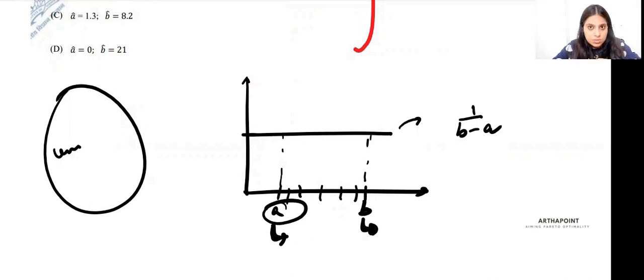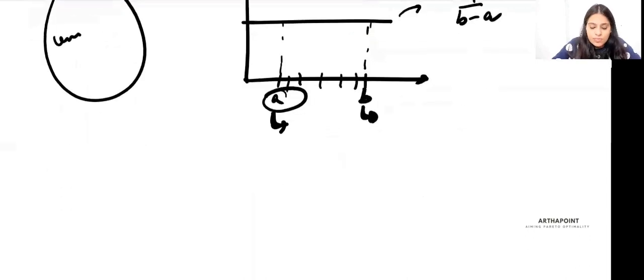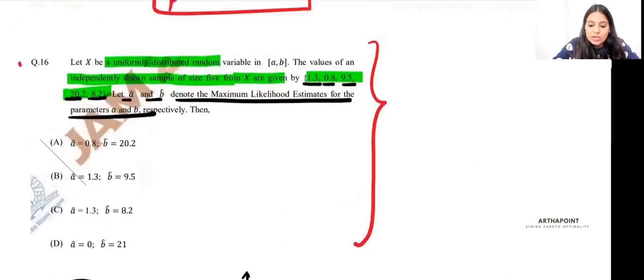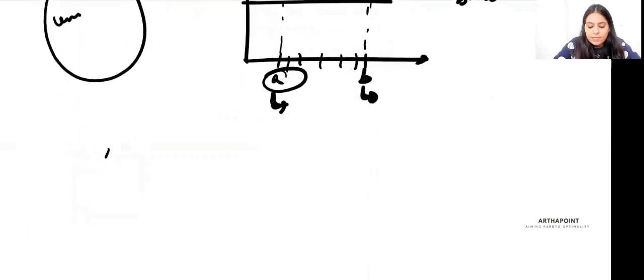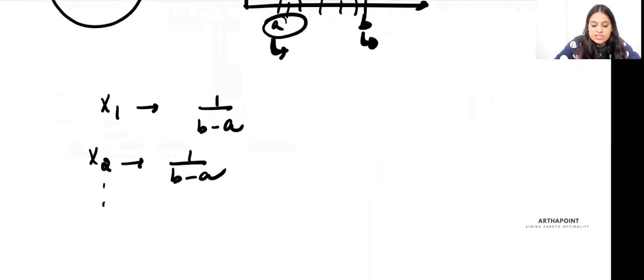The best way to estimate this interval is to maximize the likelihood estimate. So what would you do? Because X1 to X5 are independently chosen, one way you could think is: X1 comes from a uniform distribution, X2 comes from a uniform distribution, till X5, which also comes from a uniform distribution.